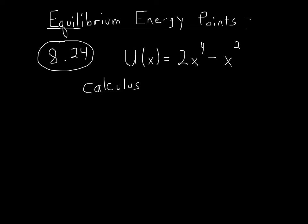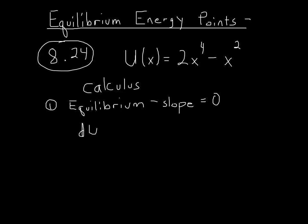The first part: what are the equilibrium points? To find the equilibrium points, you want to find where the energy isn't changing. This means that the slope of an energy versus x graph has to be zero — then you're at equilibrium. To find this point, you can take the first derivative. The slope is just the derivative. Take that first derivative and set it equal to zero. So we're going to take the derivative using the power rule of u of x equals 2x to the fourth minus x squared.